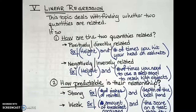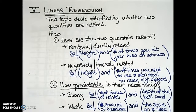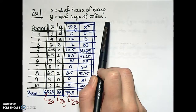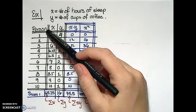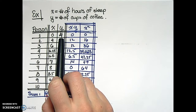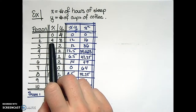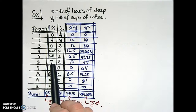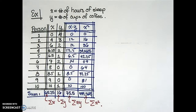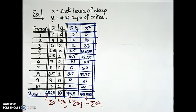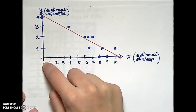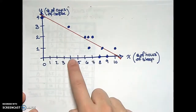The two quantities we considered were the number of hours of sleep someone got the night before and the number of cups of coffee they consumed. We surveyed 10 people. The first person had zero hours of sleep and four cups of coffee — probably pulling an all-nighter. The second person had four hours of sleep and three cups of coffee. Person number six had seven hours of sleep and two cups of coffee. An initial way to see whether these two quantities were related was to create a scatter diagram.